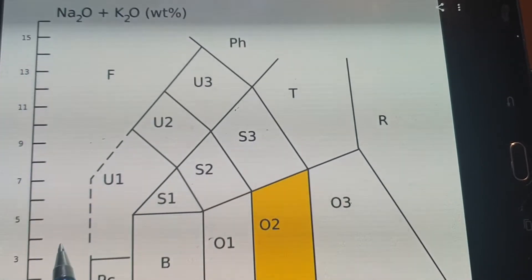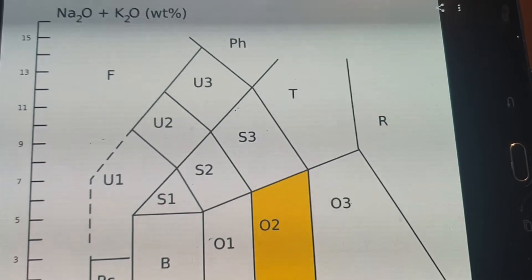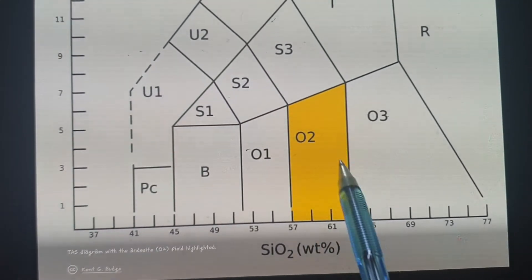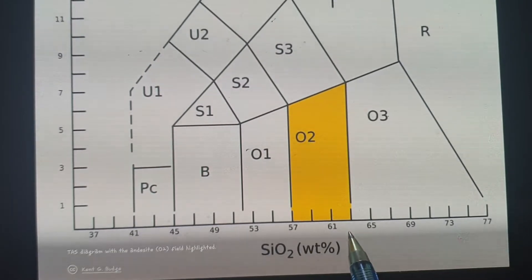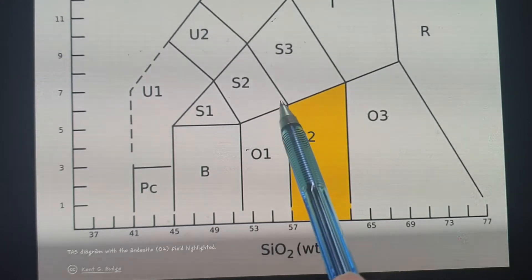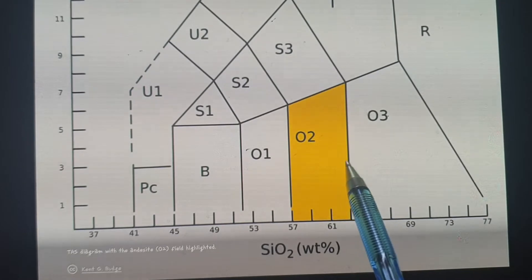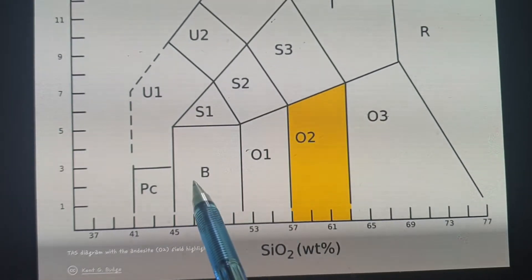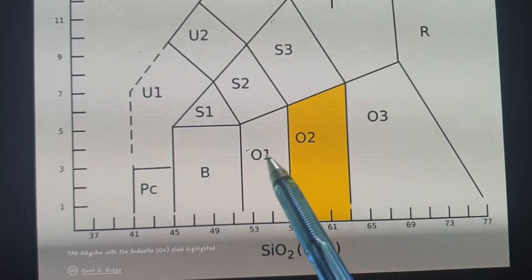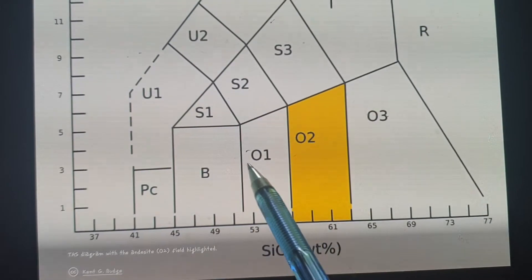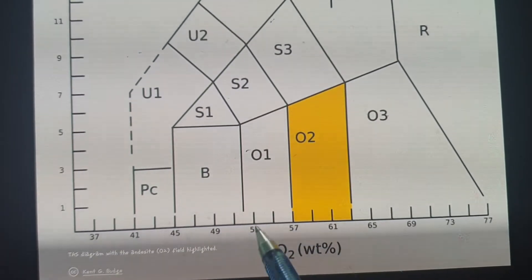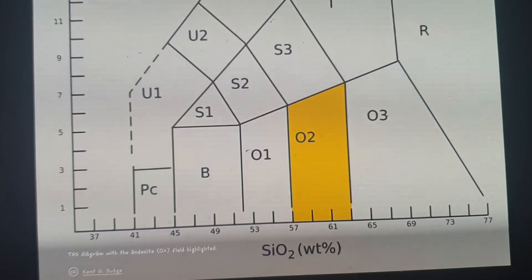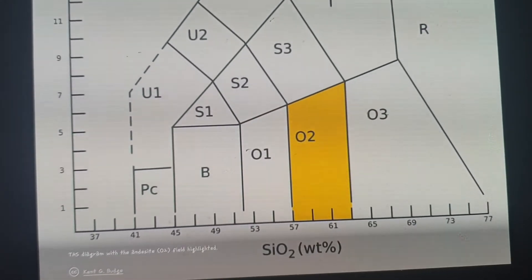Looking at the TAS diagram: on one axis we have the sodium and potassium oxide content plotted against silicon content. In the andesite portion, you have between 57 and 63 percent silicon and between 6 and 7 percent sodium and potassium oxides — different from basalt which is down here. Basalt has less than 52 percent silicon oxides. To tell the difference precisely you actually need to do chemical analysis, which is expensive.